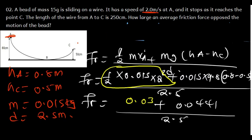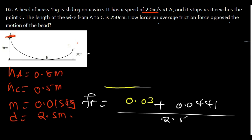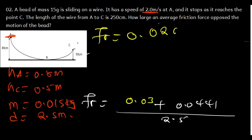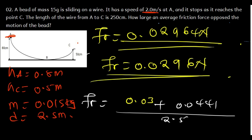Adding those together: 0.03 plus 0.0441 gives 0.0741. Dividing by 2.5, the friction force is 0.02964 newtons. Rounding off, the final answer is 0.0296 newtons. This is how large the friction force is for this question.